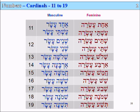Shalosh esrei for 13. Arba esrei, 14. Chamesh esrei, 15. Shish esrei, 16. Sheva esrei, 17. Shmona esrei, 18. And tesha esrei for 19.